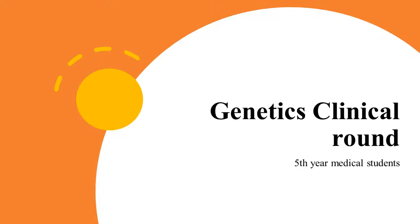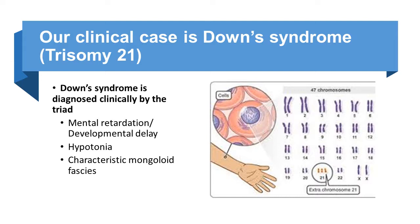Hi everybody. This is the online PowerPoint presentation for the fifth-year medical student medical genetics clinical round. During this round, we discuss the clinical as well as the laboratory diagnosis of Down syndrome, or what's known as trisomy 21. We're going to go through how to clinically diagnose the case and how to navigate within the clinical sheet in terms of physical examination and taking the history from the family to appropriately reach the diagnosis.